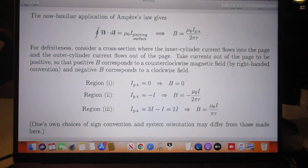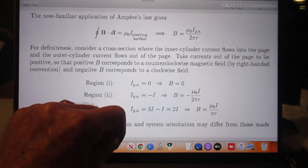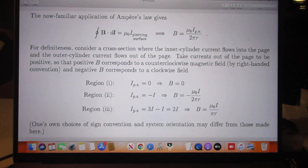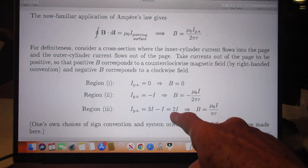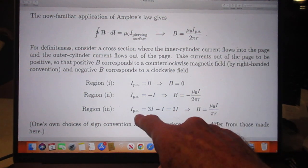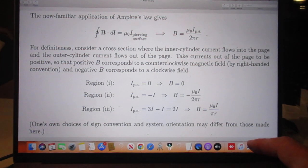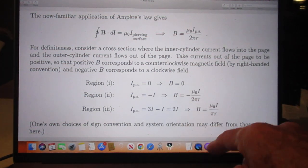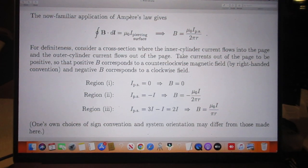Now, outside the two cylinders, there is a current three I in one direction and I in the other direction. So the net current that pierces now your surface is two I. And if you accept my sign convention, then this is the B-field outside the cylinders.